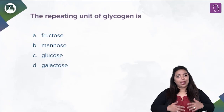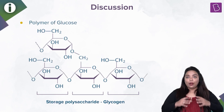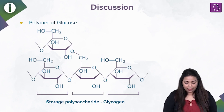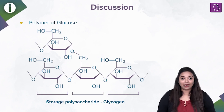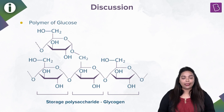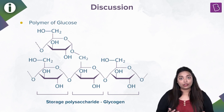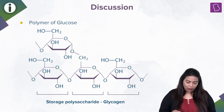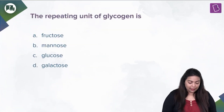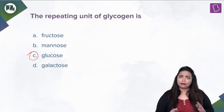Let's directly look at the structure of glycogen. Each unit that you observe in glycogen is nothing but glucose. All the excess glucose in the body is chained together and then converted into glycogen and stored in the liver. The answer is glucose — the repeating unit of glycogen. Keep it simple.